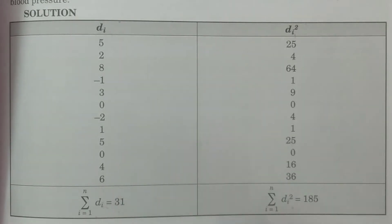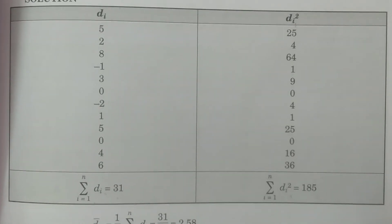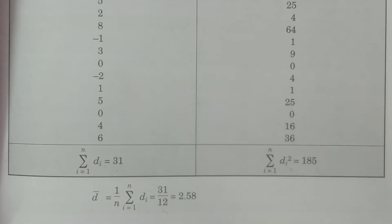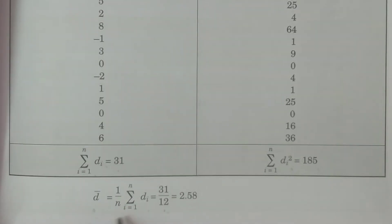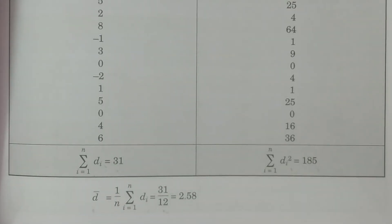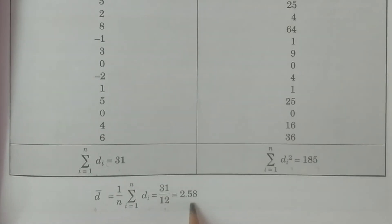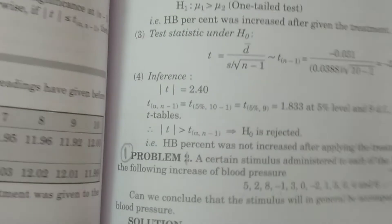The value of summation DI is 31, and summation DI-squared is 195. Using these in the formula: d-bar equals (1/n) × summation DI. With summation DI equal to 31 divided by n equal to 12, d-bar is 2.58.